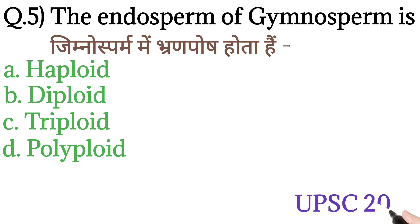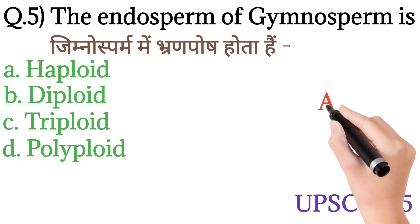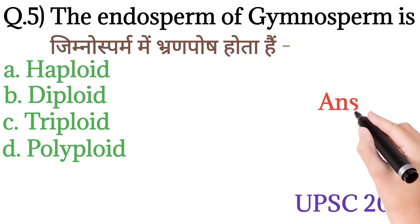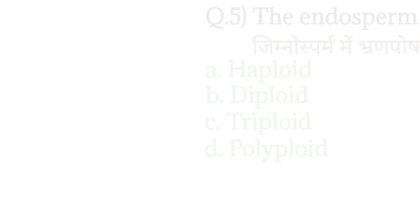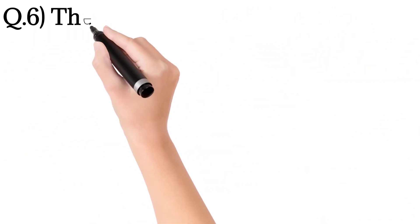This question is from UPSC 2015. The answer is option A: Haploid. Gymnosperm ka endosperm haploid hota hai.